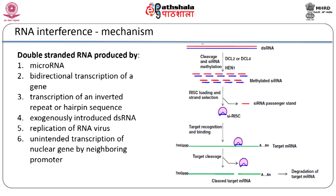One strand of the siRNA bound to the Argonaute protein of the RISC complex and served as a guide to bring the RISC complex to the homologous site on target mRNA. Binding of the RISC complex at the target site led to cleavage of the mRNA followed by its degradation. If the homology between the siRNA and target mRNA was not exact, the RISC complex did not cleave the mRNA but remained bound to it and obstructed ribosomal movement. In either case, the target mRNA was not translated.